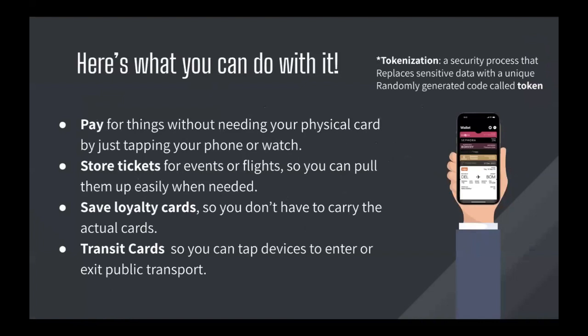Here are some basic functions of Apple Wallet. You can pay for things without needing your physical card by just tapping your phone or watch, so you can really use it as a wallet. You can also store tickets for events or flights to pull up easily when needed, save loyalty cards so you don't have to carry the actual cards, and use your phone as a transit card to tap devices to enter or exit public transport.